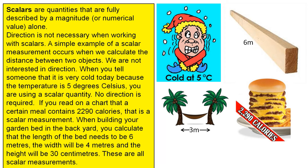When building your garden bed in the backyard, you calculate that the length of the bed needs to be 6 metres, the width will be 4 metres, and the height will be 30 centimetres. These are all scalar measurements.